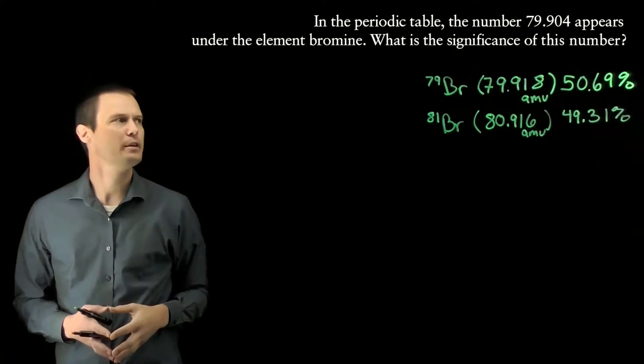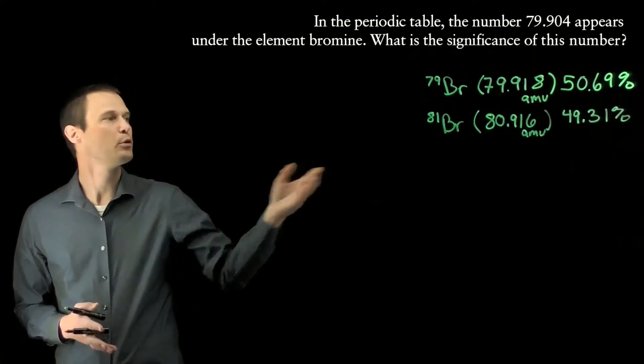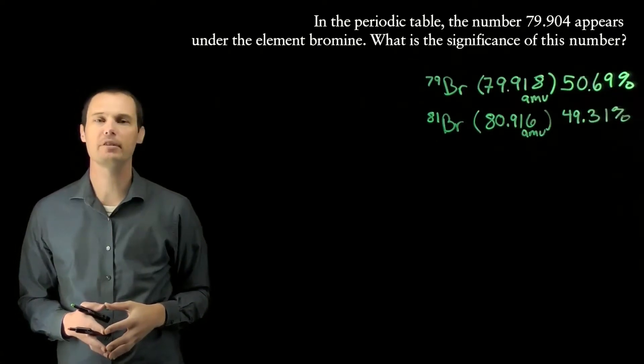Bromine-79 is a little bit more abundant at 50.69% of bromine in the universe, and bromine-81 is 49.31% of bromine in the universe.